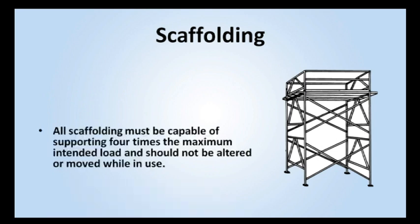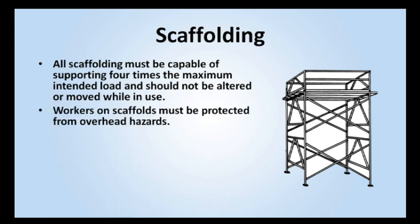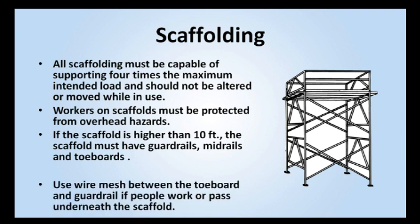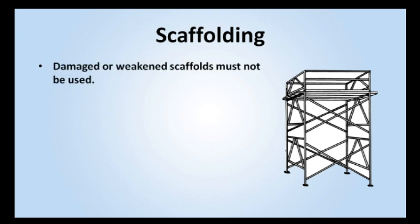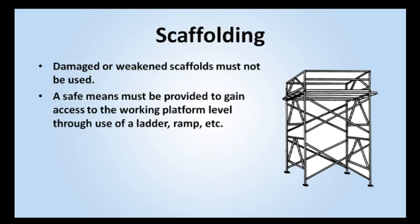All scaffolding must be capable of supporting four times the maximum intended load and should not be altered or moved while in use. Workers on scaffolds must be protected from overhead hazards. If the scaffold is higher than 10 feet, the scaffold must have guardrails, mid-rails, and towboards. Use wire mesh between the towboard and guardrail if people work or pass underneath the scaffold. Damaged or weakened scaffolds must not be used. A safe means must be provided to gain access to the working platform level through use of a ladder, ramp, etc.